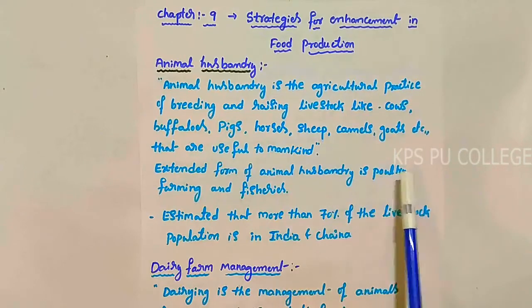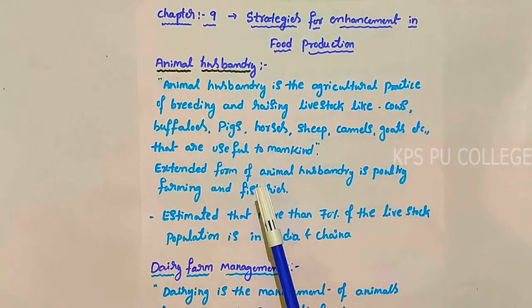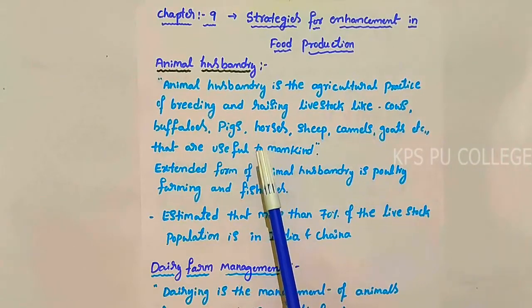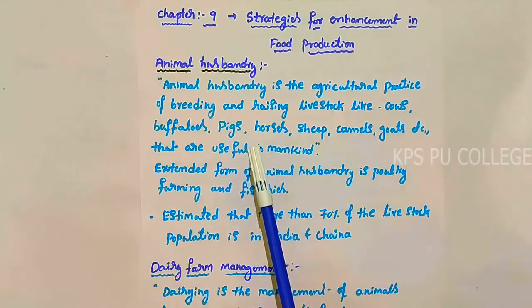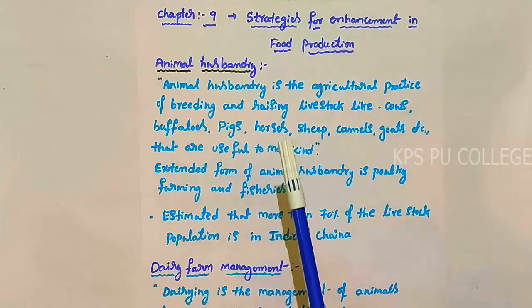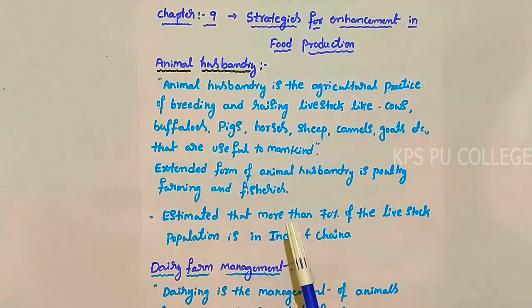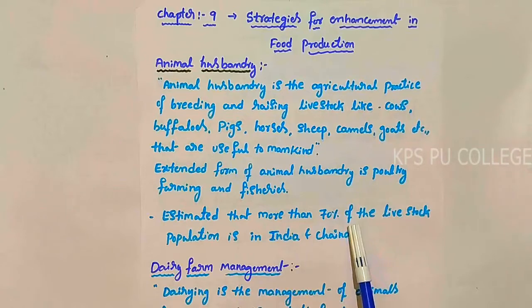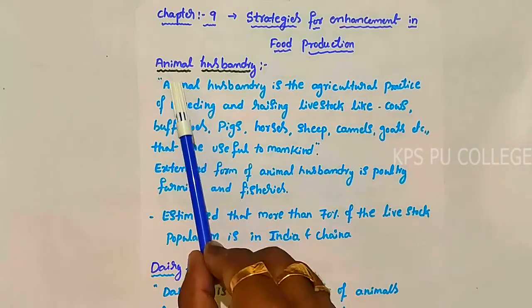The extended form of animal husbandry includes poultry farming and fisheries. The main intention of this chapter is to increase food production. It is estimated that more than 70 percent of the livestock population is in India and China.